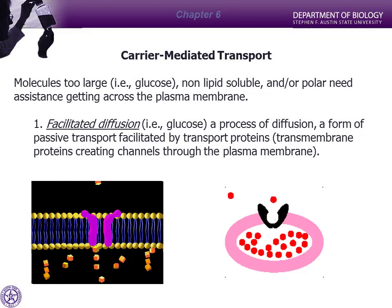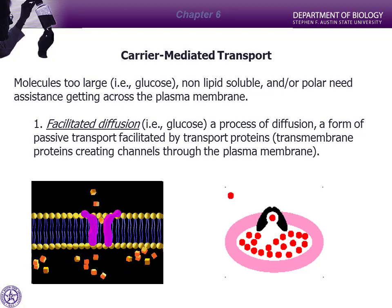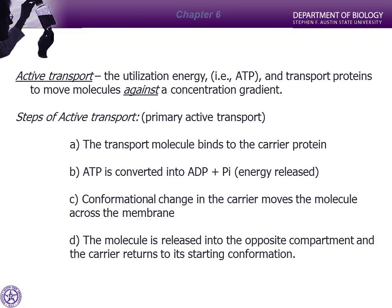Simple and facilitated diffusion are both passive transport — no energy required, direction of transport is high concentration to low. Active transport is the opposite: you do require energy, and transport is uphill or upstream. Riding a bicycle downhill you don't have to pedal, but riding uphill you've got to supply the energy. For active transport, we'll walk through some basic steps, starting simple and then adding complexity.